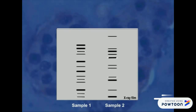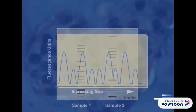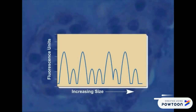The small amplified DNA fragments are fluorescently labeled and subjected to high-resolution gel electrophoresis. A fluorescence detector determines the amount of DNA in each amplified fragment.